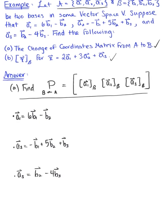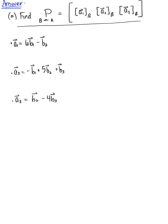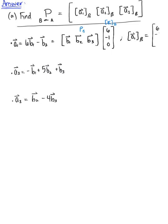We want to find the coordinates of each one of these vectors relative to basis b. To do that, let's convert each vector equation to the equivalent matrix equation. For a₁, we have the matrix with column vectors b₁, b₂, b₃ multiplied by the column vector of coefficients 6, negative 1, 0. Therefore the coordinates of vector a₁ relative to basis b is the column vector 6, negative 1, 0.